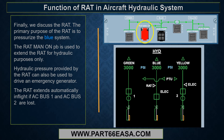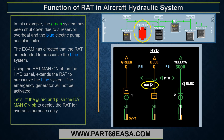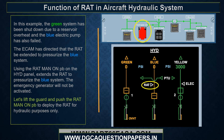The RAT extends automatically in flight if AC bus 1 and AC bus 2 are lost. The RAT MAN ON push button on the panel is used to manually extend the RAT to pressurize the blue system without activating the emergency generator. This is only required if the blue electric pump is lost and one of the other hydraulic systems has also failed. For example, if the green system has been shut down due to a reservoir overheat and the blue electric pump has also failed, the ECAM directs the RAT to be extended to pressurize the blue system using the RAT MAN ON push button on the hydraulic panel. The emergency generator will not be activated. Lift the guard and push the RAT MAN ON push button to deploy the RAT for hydraulic purposes only.